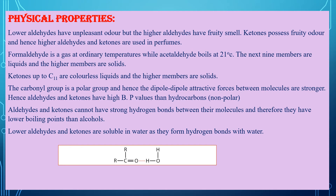Aldehydes and ketones cannot have strong hydrogen bonds between their own molecules, and therefore they have lower boiling points than alcohols. Alcohols can form strong hydrogen bonds among themselves, whereas aldehydes and ketones cannot. Because of this, carbonyl compounds possess lower boiling points than alcohols.